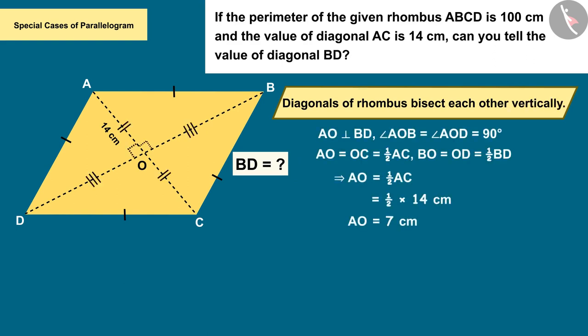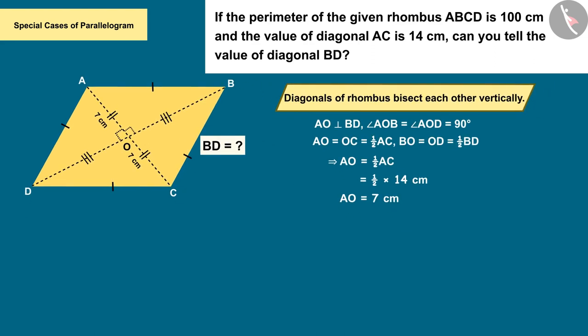In the question we are given the perimeter of ABCD as 100 centimeters, and we know that all the sides of the rhombus are of equal measure.